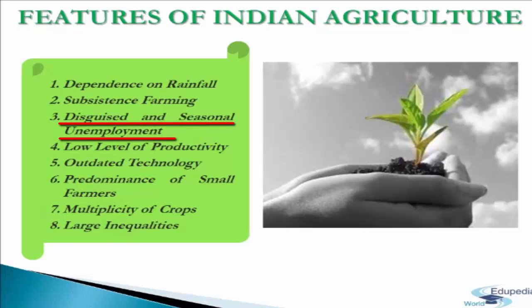Disguised unemployment means that the number of persons engaged on a given piece of land is more than what is actually required. Their marginal productivity is zero or negative. Disguised unemployment is permanent in character, with 20–25% of workers rendered unemployed. Similarly, due to the seasonal nature of agricultural activities, a large number of farmers and workers do not get employment for 4–5 months in a year.